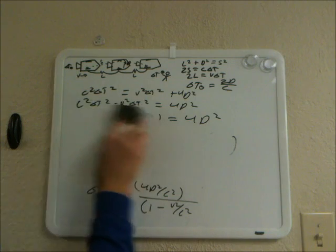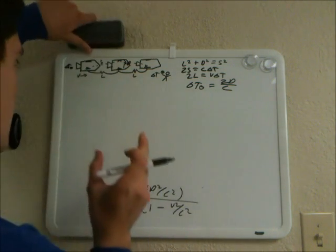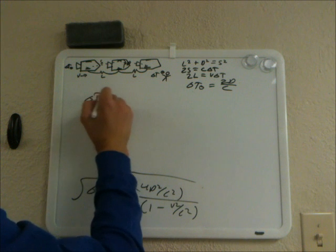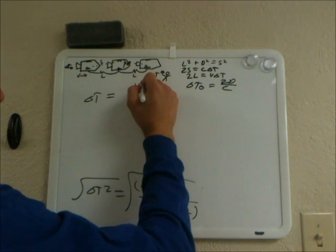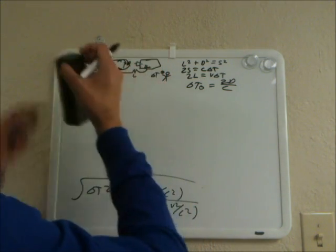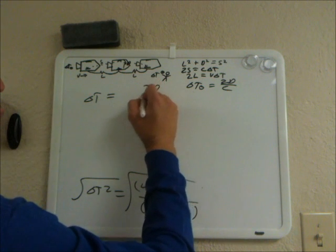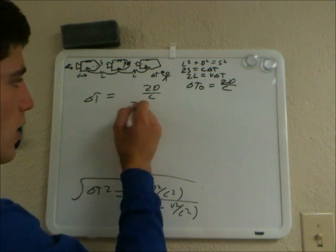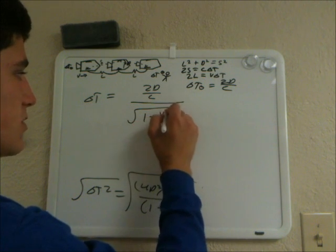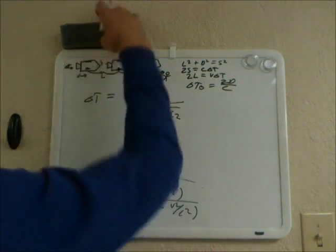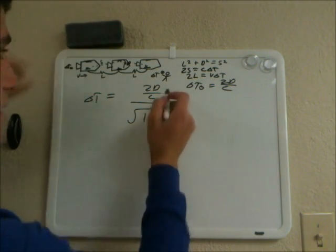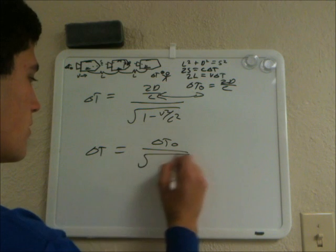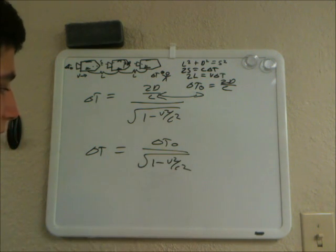For those of you not new to relativity, this will start to look very familiar. Taking the square root of both sides: the square root of 4D squared over C squared is 2D over C, over the square root of (1 minus V squared over C squared). And we know that delta T naught equals 2D over C, so replacing that we get delta T equals delta T naught over the square root of (1 minus V squared over C squared). And that is time dilation.